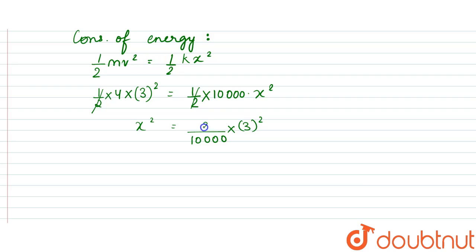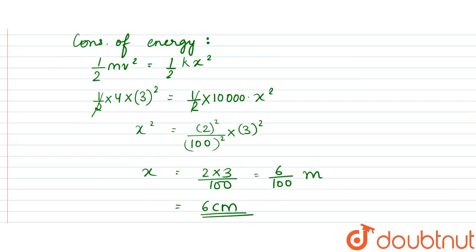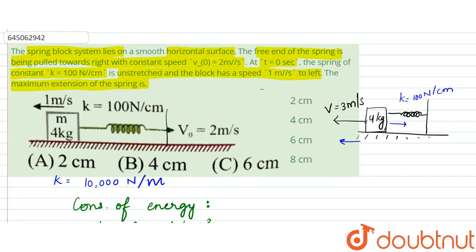So it is 2 square, this is 100 square. So x would be equal to 2 into 3 by 100, so that is 6 by 100 meters. That is equal to 6 centimeters, so our answer would be option C that is 6 centimeter.